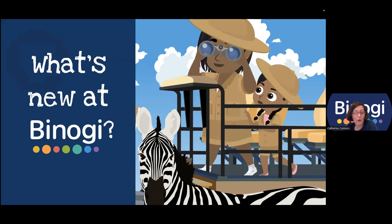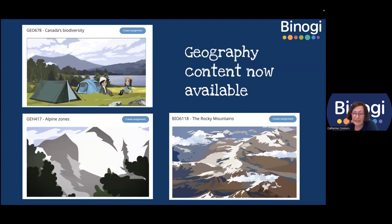Binogi is a living platform — it's always changing and evolving. All development on our platform is informed by user feedback as well as feedback from our research team at OISE. Some of the things that are new at Binogi: we have added geography content intended to support the social studies curriculum in grades seven and eight. Previously we offered mathematics and science for the intermediate division, and now we've also added geography content specifically for grades seven and eight.